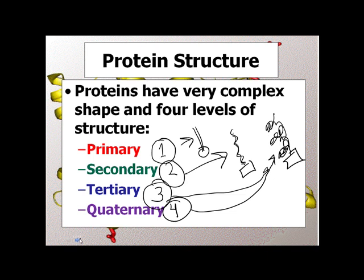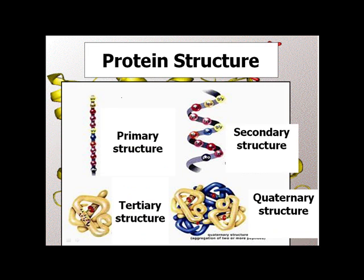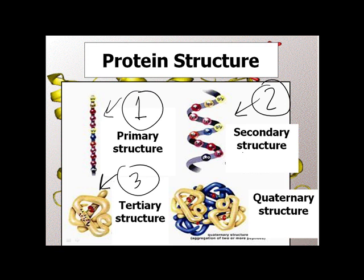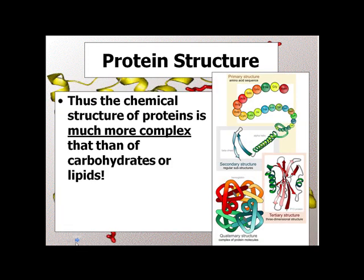Quaternary would be if you did this with a red and a blue rubber band and put them together. Let's take a look at some pictures. Primary — exactly. Secondary is twisted up. Tertiary is when it begins doubling up on itself, jumbled together. Quaternary is when you have multiple proteins working together in a big wad shaped like an enzyme. The shape of proteins is much more complex than carbohydrates and lipids because it gets twisted up and wadded up.